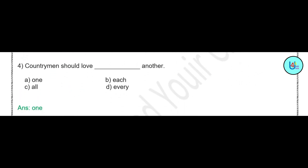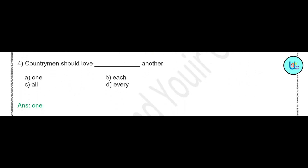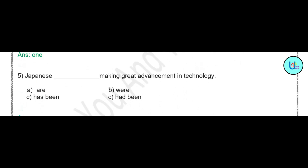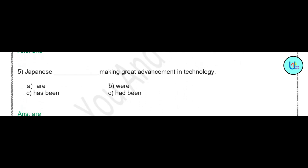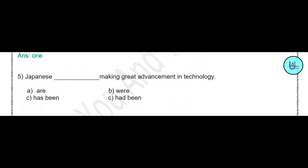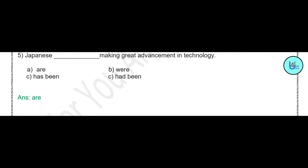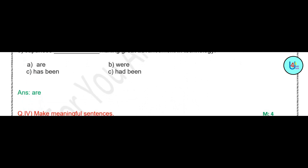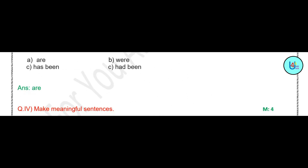'Countrymen should love dash another.' Options are: one, each, all, every. The correct answer is 'one' — countrymen should love one another. Next: 'Japanese dash make great advancement in technology.' Options are: are, were, has been, had been. The correct answer is 'are' — Japanese are making great advancement in technology.